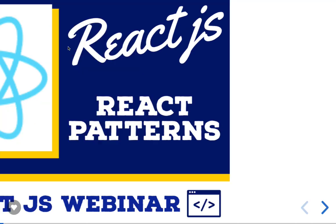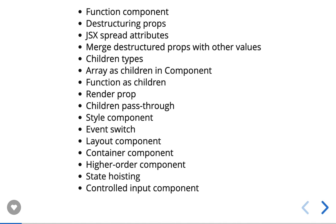So what patterns do we see in React.js? Functional component, destructuring props pattern, JSX spread attributes - you can call them mini patterns or just a style of writing code. We have spreading props, children types, array as children, function as children, render props pattern, event switch, layout component, container component, dump component, higher order component, controlled input component, and compound component pattern.